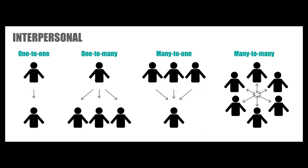Now, briefly, all the different types of interpersonal communication — the standard ones: one-to-one is when you are sending or receiving information to one person. One-to-many can be a group or a person sending information to several people. Or it could be several people sending information to one person, which is called a many-to-one model.